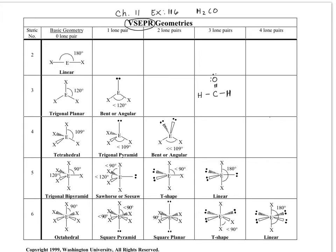According to Valence Shell Electron Pair Repulsion theory, your electron pair repulsions from your lone pairs and from your bonds are going to repel each other, therefore causing a change in the geometry.